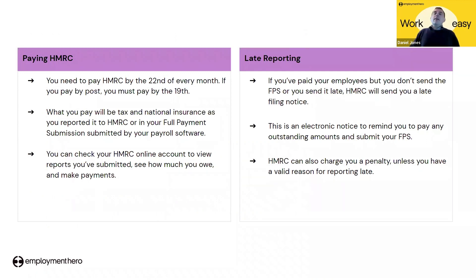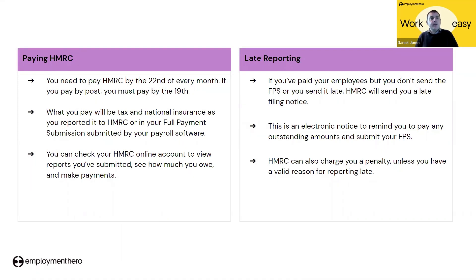Once you've calculated and paid your employees' net wages, the next part is to pay HMRC. You need to pay HMRC by the 22nd of each month, or by the 19th if you pay by post. You will pay the tax and national insurance reported in your full payment summary submitted by your payroll software. You can check your HMRC online account to view what you've submitted, see how much you owe, and make payments — and your payroll software will also assist you with that.